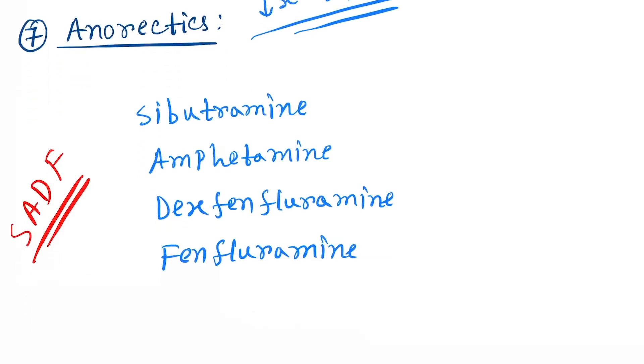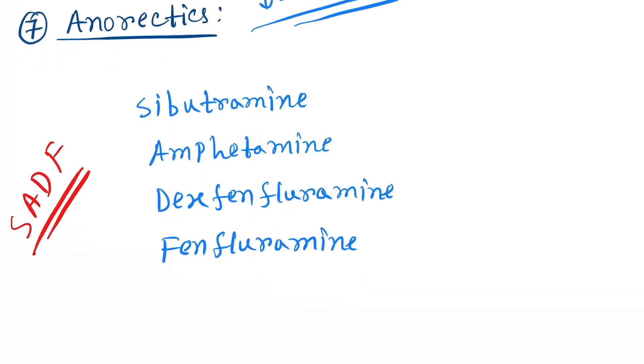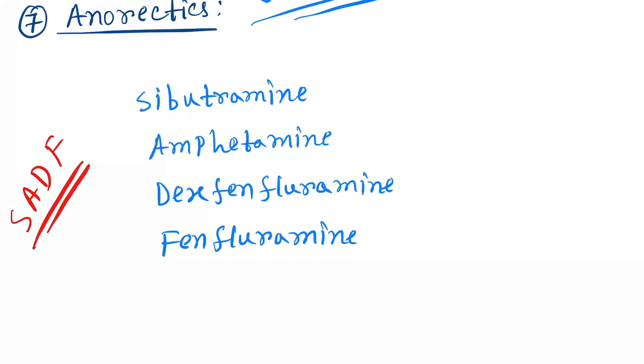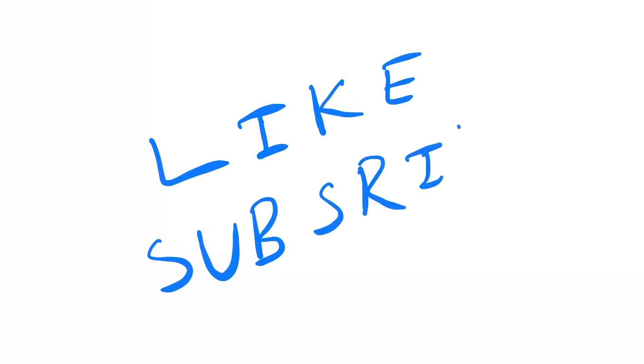Next are anti-obesity drugs — which is very sad for food lovers. The mnemonic is SAD: S for sibutramine, A for amphetamine, D for dexfenfluramine and fenfluramine. That's it for the drugs of the adrenergic class. If you like this video, please hit the like button and subscribe to the channel.